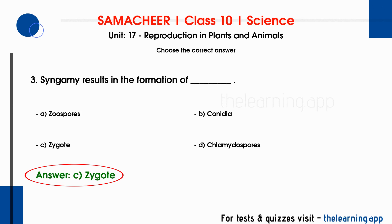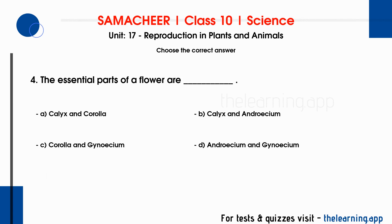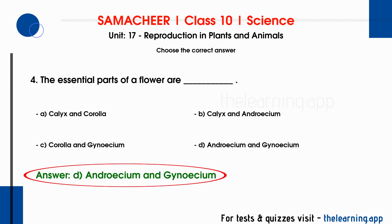The essential parts of a flower are DASH. Options are A. Calyx and corolla, B. Calyx and androecium, C. Corolla and gynoecium, D. Androecium and gynoecium. The correct answer is option D, androecium and gynoecium.